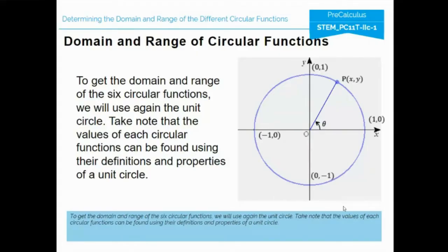For the domain and range of the six circular functions, we will use the unit circle. The values of each circular function can be found using their definitions and properties of a unit circle. For zero degrees, the cosine and sine coordinates are 1, 0. For 90 degrees, 0, 1. For 180 degrees, negative 1, 0. For 270 degrees, 0, negative 1. And back to 360 degrees, 1, 0. The point on the circle is (x, y), where cosine theta equals x and sine theta equals y.